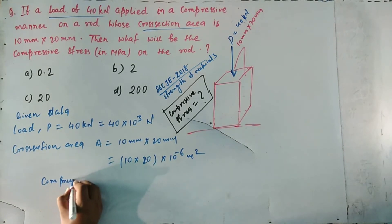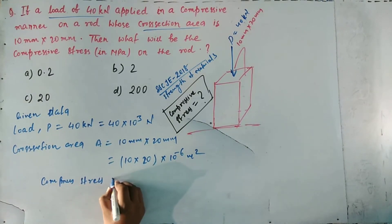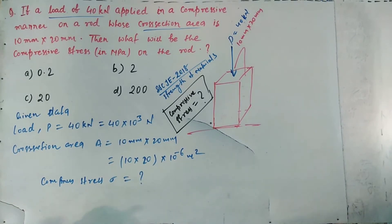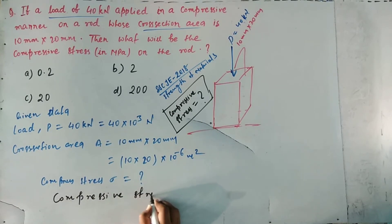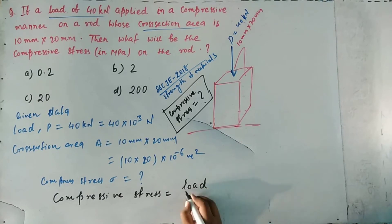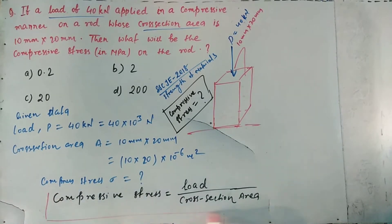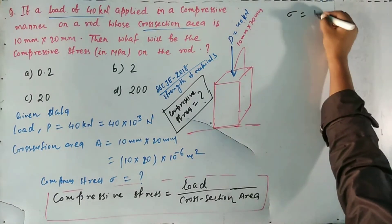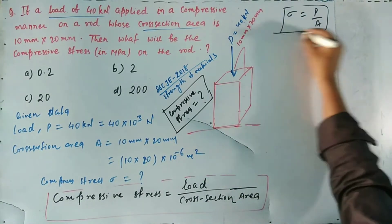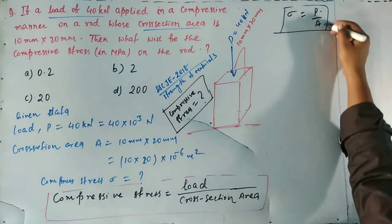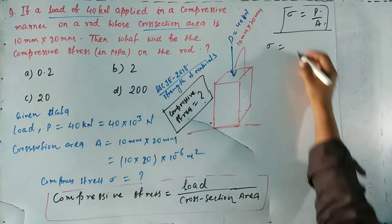Now we find the compressive stress. The relation for compressive stress Sigma is: compressive stress equals load divided by cross-section area. Using this formula, Sigma equals P divided by A, where P is the load and A is the cross-section area.